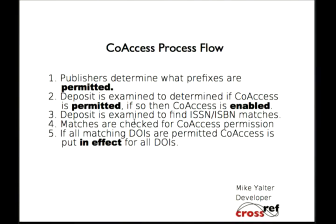The way that CoAccess will work is: the publishers tell us what other publishers are okay to send in information about their DOIs. That basically says that CoAccess will now become permitted, and those prefixes are permitted to be CoAccess deposits. And I'm not repeating the word books, but for right now this is only to do with books and not journals. So when the deposit comes in, we check to see the CoAccess situation in the actual deposit, and this determines if the deposit coming in is already owned by a different prefix. We check to see if they are in a permitted group.